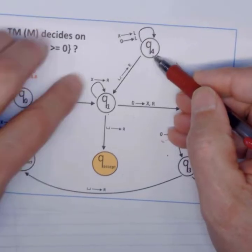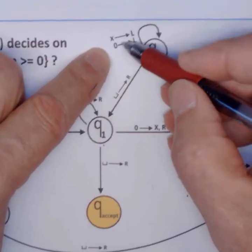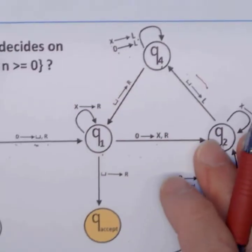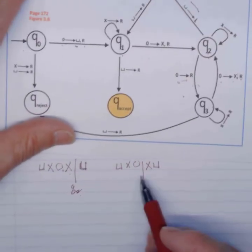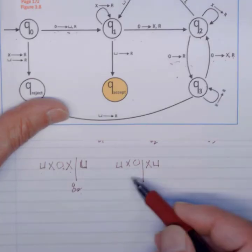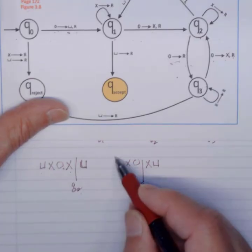So we're going to take this transition and move left. So we are going to be in this state Q4. I am at Q4. At Q4, if I read an X, I move left. If I read an 0, I move left. Do I have Xs and 0s left in my string? Yes, I do. So I'm going to keep moving left, left, left, all the way here.